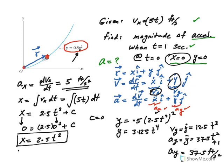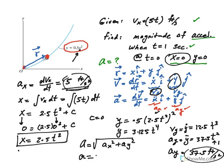Now you have the x component of acceleration and y component of acceleration. Here's the x component, here's the y component. You have the total acceleration: square root of ax squared plus ay squared, which is simply 5 squared plus 37.5 squared, which actually comes out to 37.83 feet per second squared.